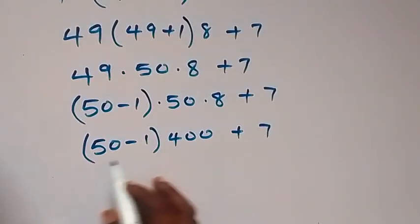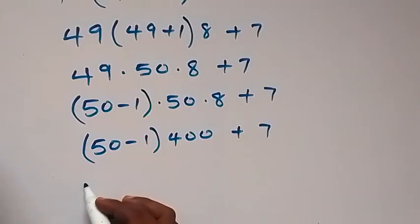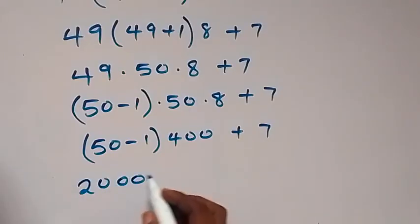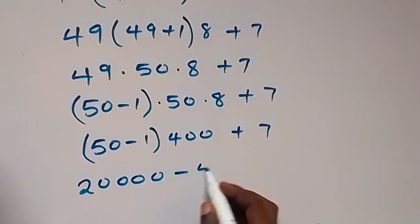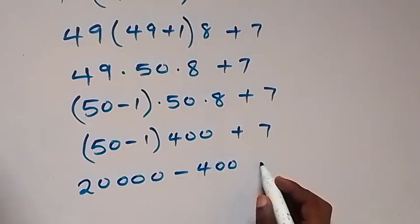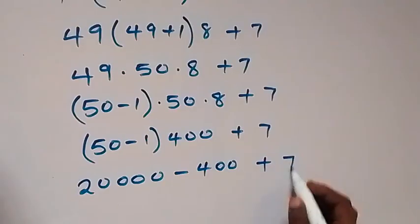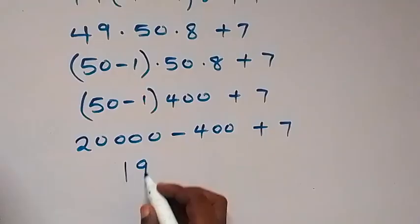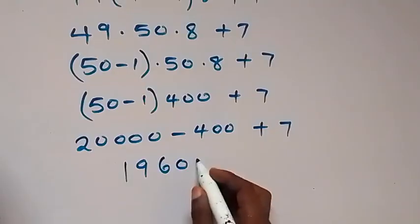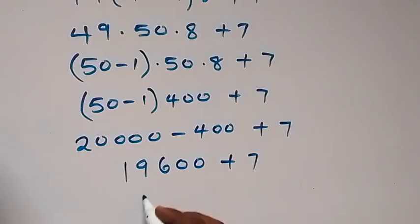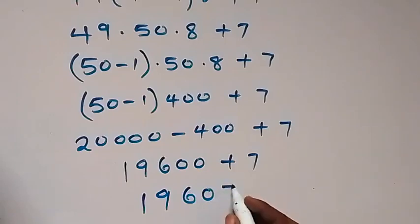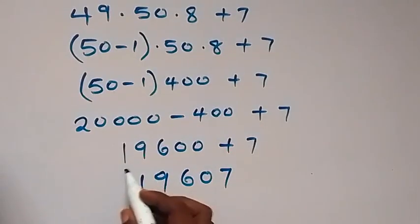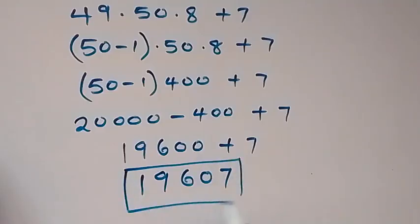Opening the bracket: 50 times 400 gives us 20,000, then minus 400, then plus 7. So 20,000 minus 400 gives us 19,600, plus 7, and this becomes 19,607. Here we have the final answer to this given problem.